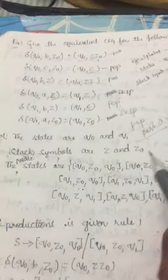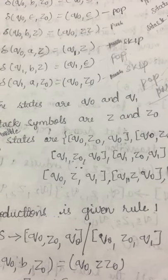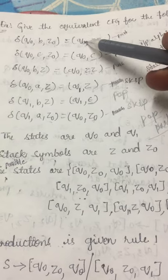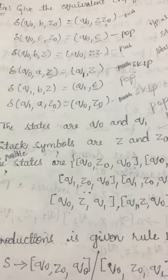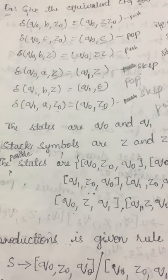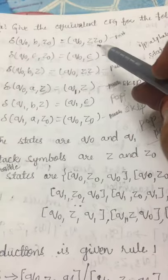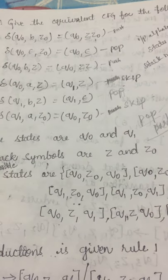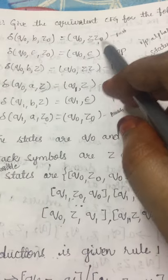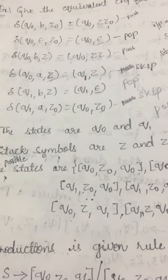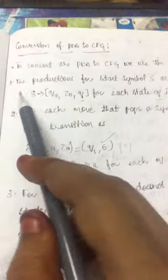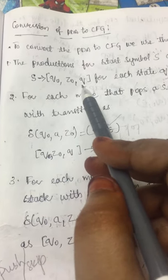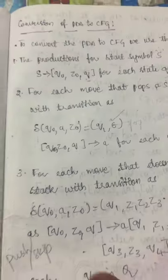Now let us identify the states. Observing the PDA, the states are Q₀ and Q₁ — apart from these, no other states are present. The stack symbols are the symbols pushed into the stack: Z and Z₀. Now we need to write the possible states. In the algorithm, S produces Q₀ Z₀ Q — where Q is once Q₀ and the other time Q₁.